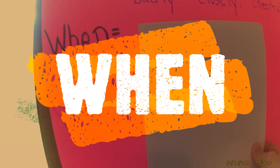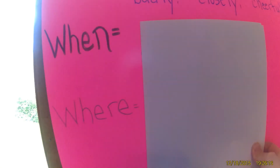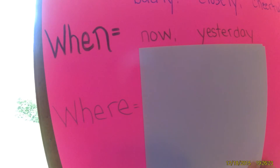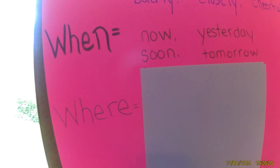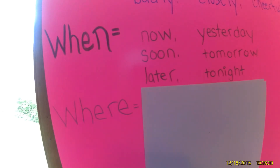Now we're going to look at when. When something takes place is an adverb. We could use the words now or yesterday, soon, tomorrow, later, or tonight. We could say something along the lines of: we are going to go for a walk tonight. The adverb would be tonight.